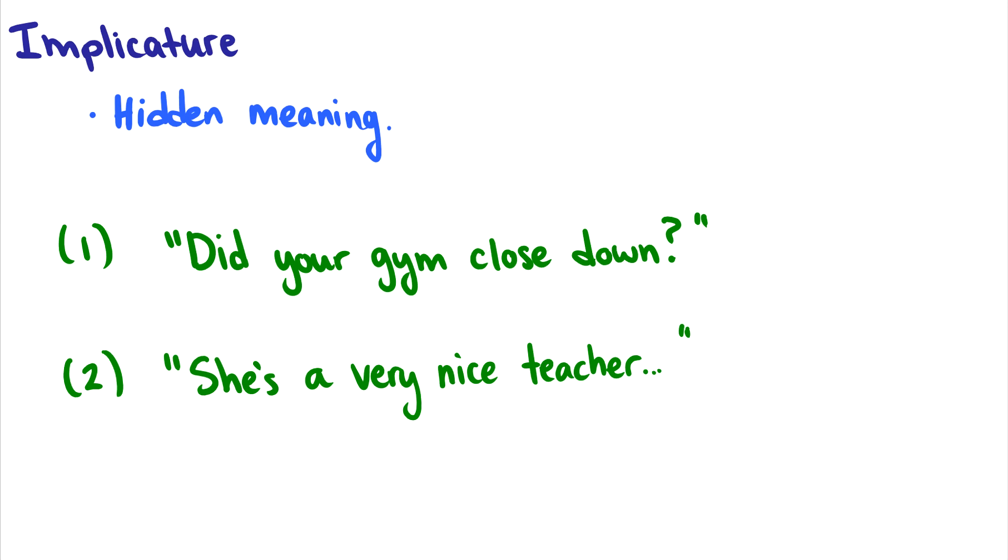Now, the last two things we'll talk about are implicature and presupposition. And we already kind of covered implicature when we talked about the singing example. And this is when sentences have hidden meanings. And in my example, we used it to be rude without being directly rude. And a lot of implied statements happen to be a little rude in English.